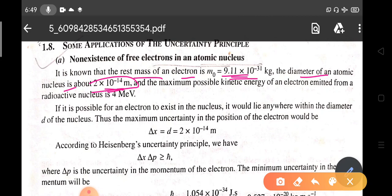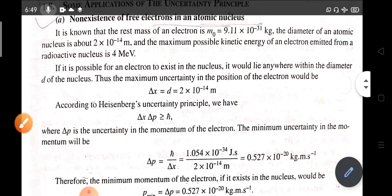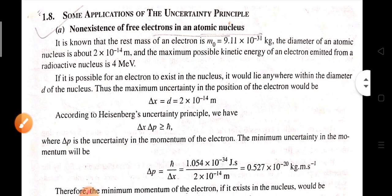You should calculate the maximum possible energy for the electrons. We know the electrons emitted from a radioactive nucleus have energy of 4 MeV. Now we calculate it for free electrons inside an atomic nucleus.